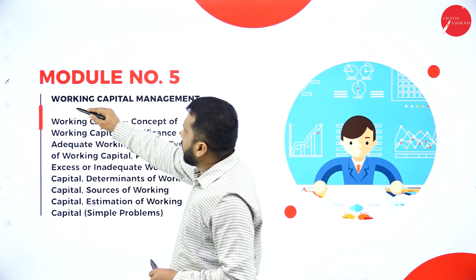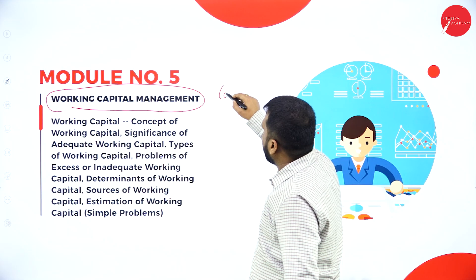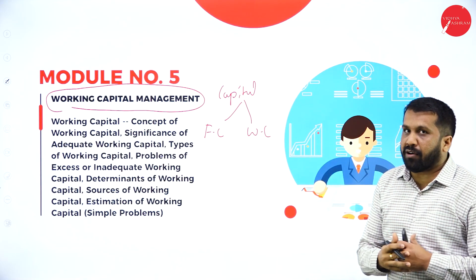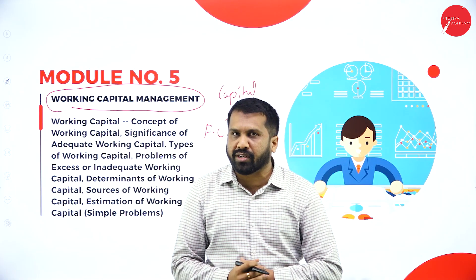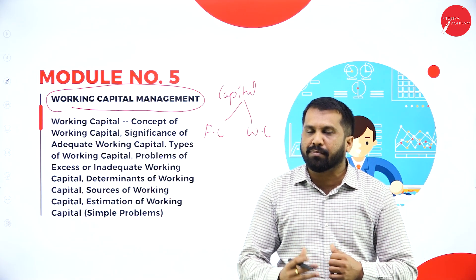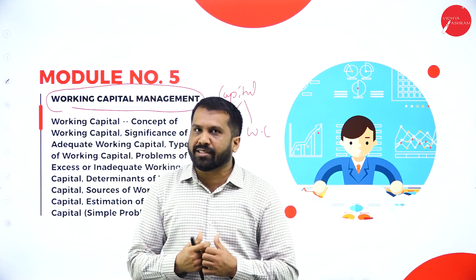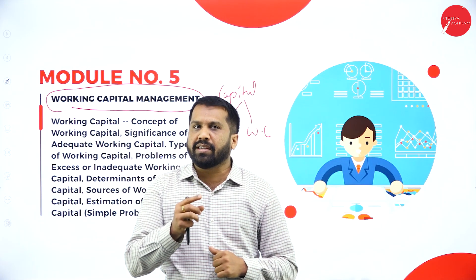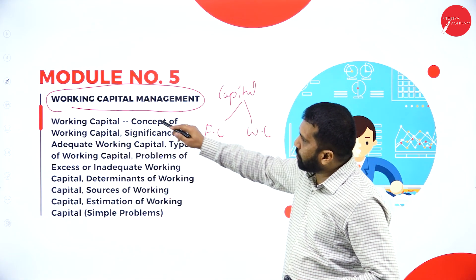Unit five is working capital management — one of the easiest topics. There are two types of capital: fixed capital and working capital. When starting a new business, the building, infrastructure, and machinery all come under fixed capital. Once the business is set up, day-to-day expenses — raw materials, employee salaries, rent, and electricity — all come under working capital. Working capital management helps determine how much working capital is required to run the business.